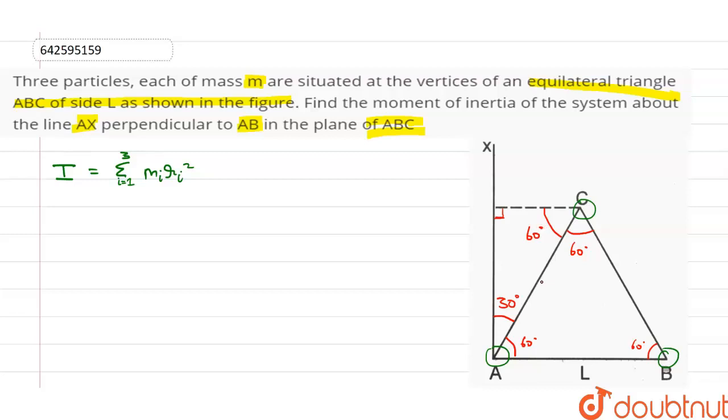So if length AC is L, then let's call this point D. Then length CD will be L cos 60 degrees, which is equal to L by 2. So let's write down the perpendicular distances r for each of the mass.